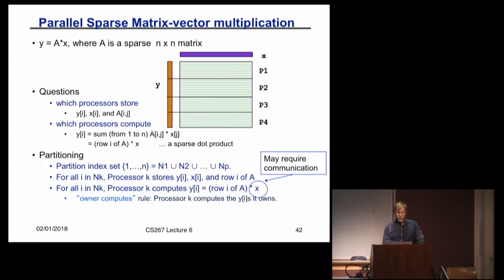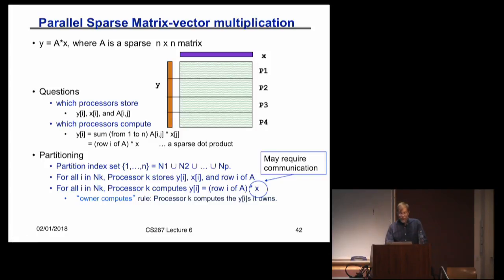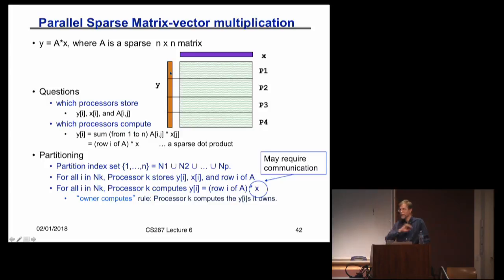What I'd like to do is figure out how to assign rows to each of the four processors. I need to take all the row indices one through n and break them up into p — four in this case — disjoint pieces. What do I want to optimize? I want to load balance and I want to minimize communication. Each processor is going to be responsible for doing the dot product of the rows it owns with the entries of x and storing that entry in y.